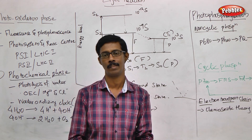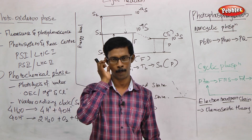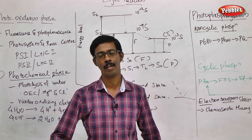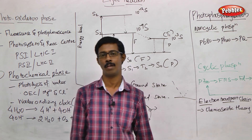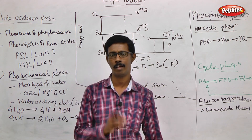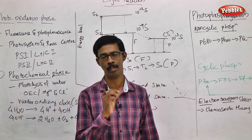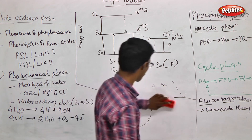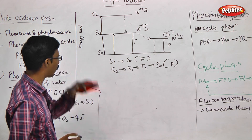In photosynthetic pigments, there is fluorescence and phosphorescence. In the pigments, when light raises electrons from the ground state, they become excited. For example, we discuss two types of wavelengths: blue light and red light. Blue light is short wavelength and high energy.